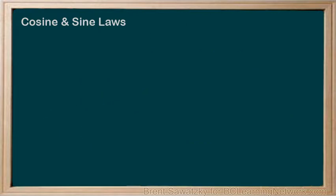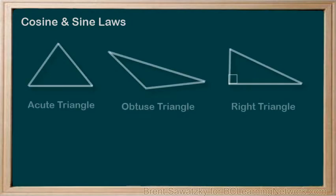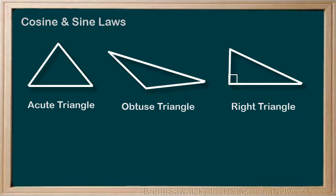In this tutorial, we did a quick review of cosine and sine laws. We noted that cosine laws and sine laws work for any types of triangles: acute, obtuse, or even right triangles, though you'd commonly use standard trig ratios for right triangles.